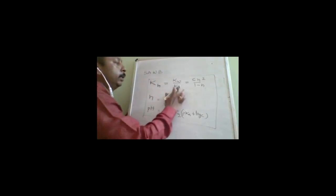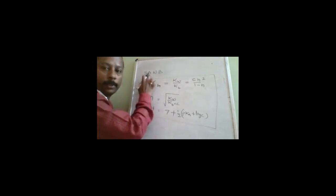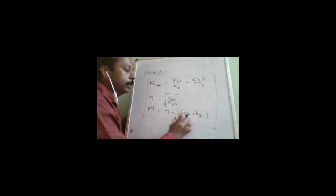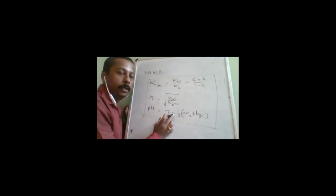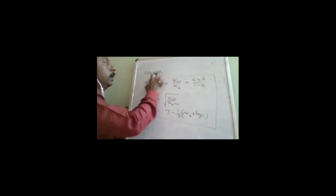For salt of strong acid and weak base (SA+WB): replace Ka with Kb in the formulas. The Kh formula becomes Kw / Kb. The h formula remains structurally the same. For pH: since strong acid dominates, pH < 7, so the formula becomes pH = 7 − ½·pKb − ½·log c (plus is replaced with minus, and pKa is replaced with pKb).